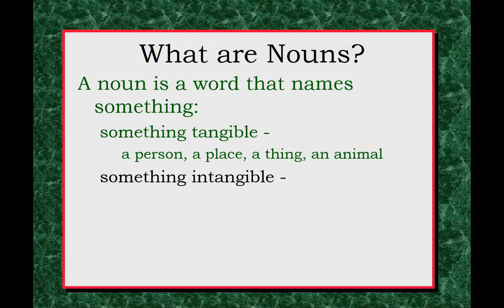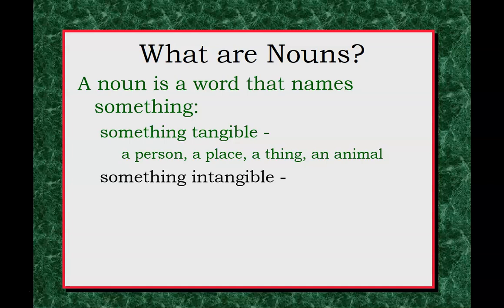Abstract things could include things like activities, ideas, events, emotions, concepts, and anything that is abstract or an abstraction.